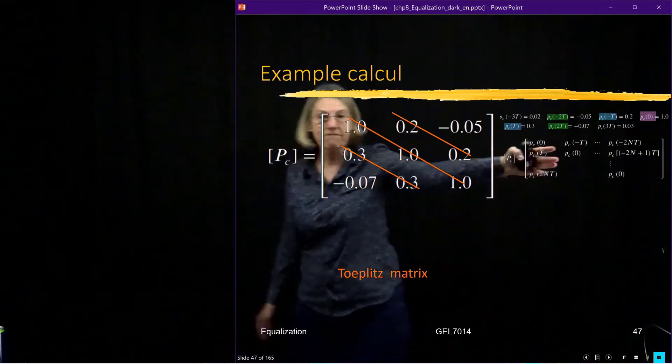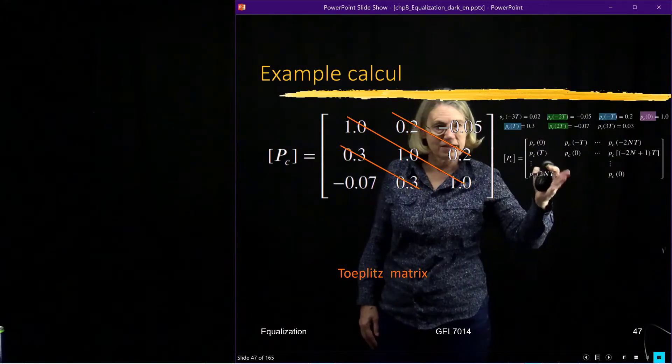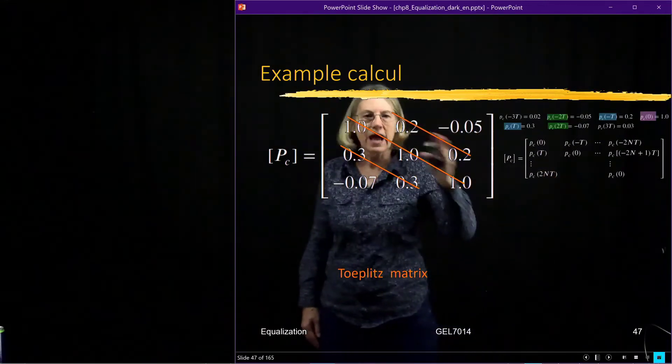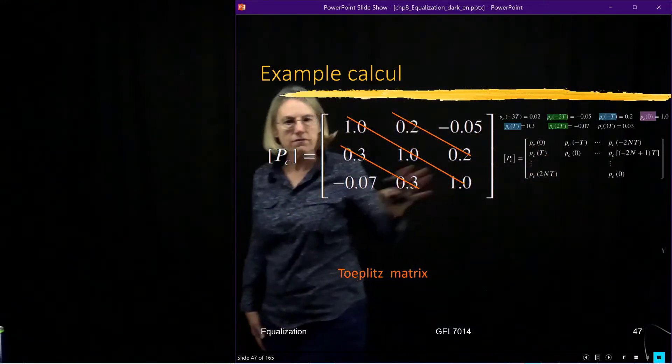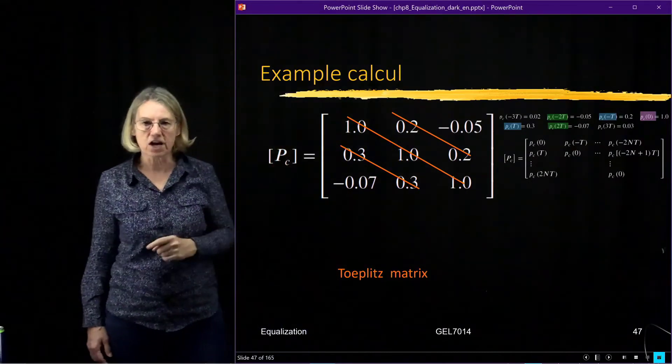It comes directly from the definition of this matrix, the construction of this matrix. I do this shift, and so that sort of assures that I've always got these constants.